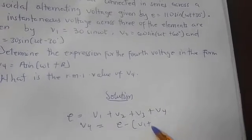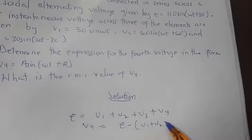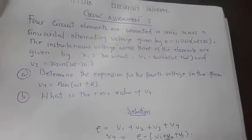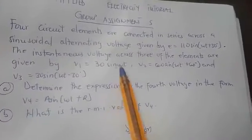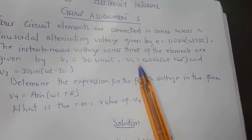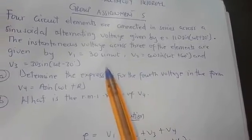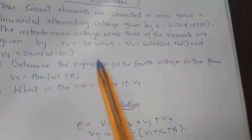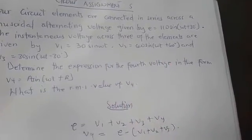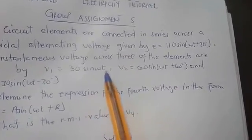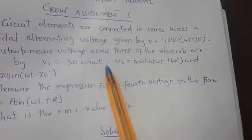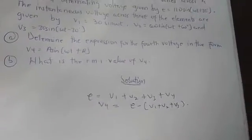V4 is therefore equal to e minus (V1 + V2 + V3). These are not constants — they are sinusoidal — so we treat them differently. We have to resolve them with respect to their phase angles. Since V1 has no phase angle, its phase angle is zero.